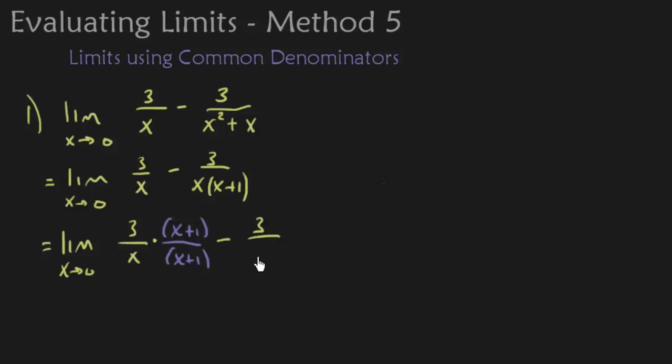We got 3 over x, x plus 1. So now we have a common denominator. They both have the same one. What I'm going to do is distribute the 3 here. So that's going to give us 3x plus 3 over the denominator, the common denominator.